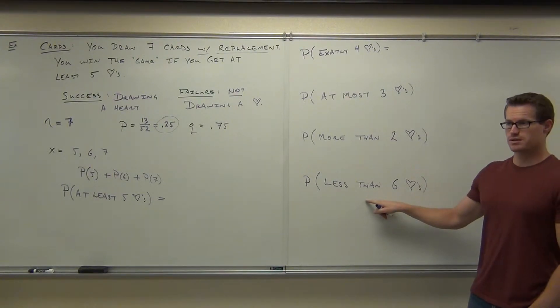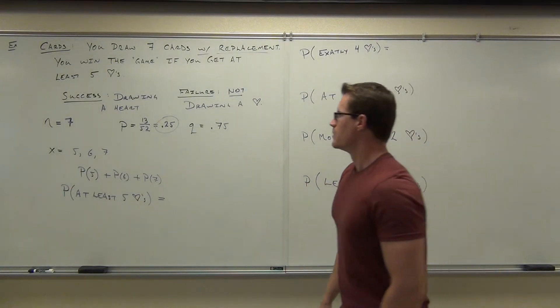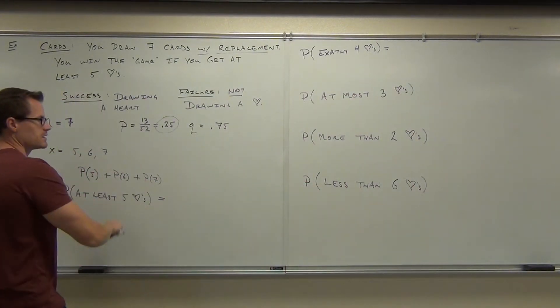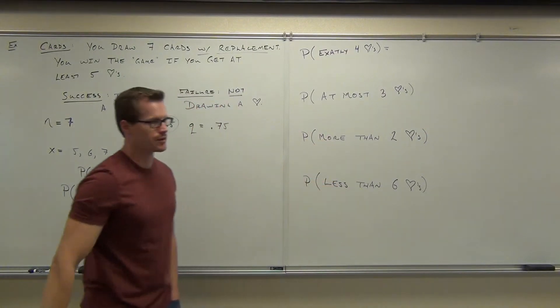What wins for less than six hearts? Zero. Zero wins. That's less than six. One, two, three, four, five, six. No, that's not less than six. These are most of the scenarios you're going to see. Most things we see are at least, exactly, at most, more than, less than. Those are the scenarios.